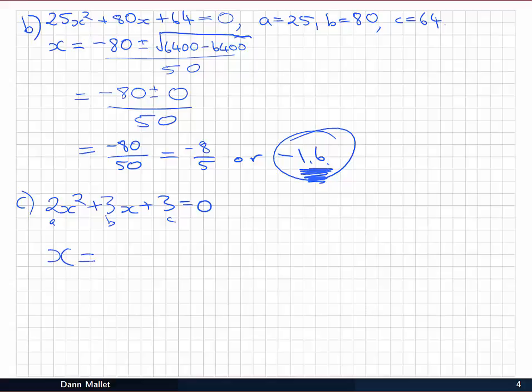Our quadratic formula says that x is -b, or -3, plus or minus the square root of b². That will be 9, minus 4 by 2 is 8, by 3 is 24, all divided by 2 times a, or 4. Now in this case we can see we've got -3 plus or minus the square root of 9 - 24 is -15.